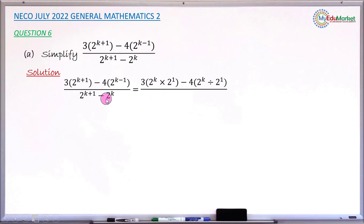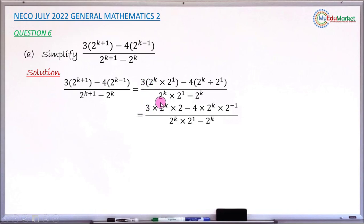Coming to the denominator, I do the same: 2 raised to the power of k plus 1 becomes 2 raised to the power of k multiplied by 2 raised to the power of 1, then minus 2 raised to k. Looking at the denominator, I expand the two brackets by multiplying by what is outside: 3 times 2 raised to k times 2 raised to 1, minus 4 times 2 raised to k times 2 raised to minus 1 — changing division to multiplication by the reciprocal. The denominator becomes 2 raised to k times 2 raised to 1, then minus 2 raised to k.